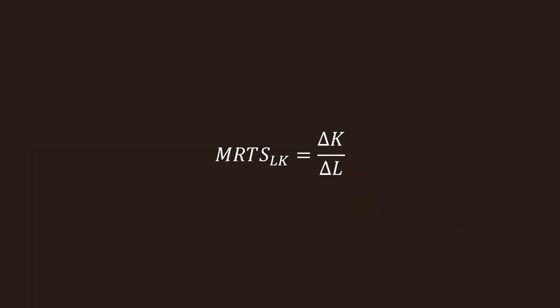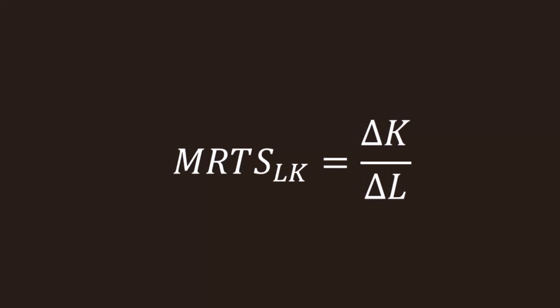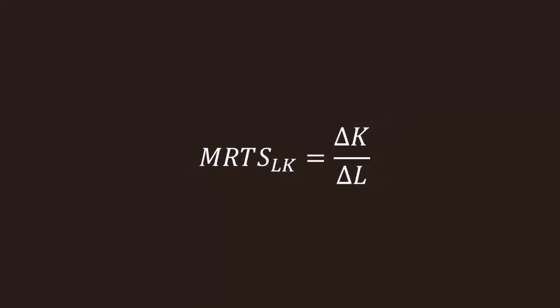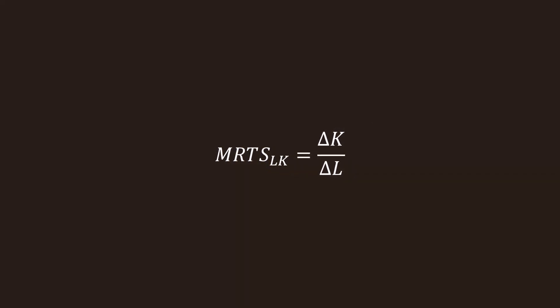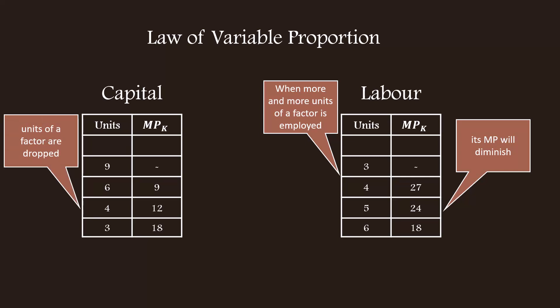We know marginal rate of technical substitution of labor for capital is equal to ΔK by ΔL. We shall start from here. But before that, bring to your memory what you have already learned in the Law of Variable Proportions. When more and more units of a factor are employed, its marginal product will diminish. One additional thing to know: what will happen to marginal product if units of a factor are dropped from production? Of course, the reverse will happen — marginal product will increase. This is going to be the basis of our today's discussion.